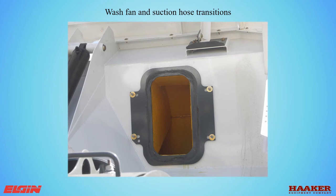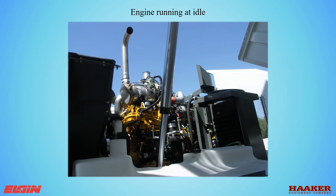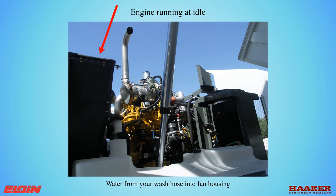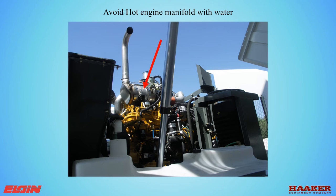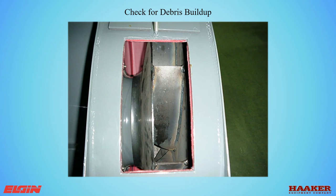Clean the fan transition seal and suction hose seal, and clean the body contact areas for those seals. Start the auxiliary engine and let it run at idle with the pickup head down and vacuum enhancer closed. Aim water from the wash hose into the fan housing long enough to see clean water coming out from underneath the pickup head. Avoid hitting the hot engine exhaust manifold with water. After rinsing the fan, shut the engine off and put the keys in your pocket. Remove the fan housing inspection cover and inspect the fan.